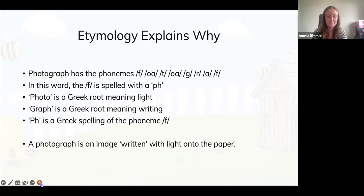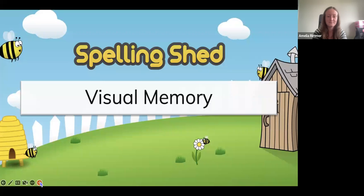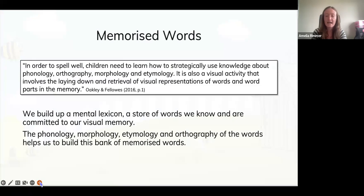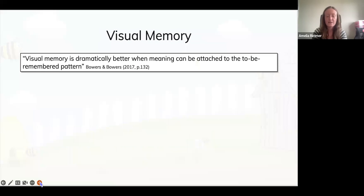Finally, there's visual memory. Even with all that phonics, orthography, morphology, and etymological knowledge, spelling is still a visual activity — a visual representation of a word. We need to build up a mental lexicon and a store of words committed to visual memory, and the phonology, morphology, etymology, and orthography all help us build that up. Visual memory is much better when you can attach meaning to it — through the morphemes within the word.